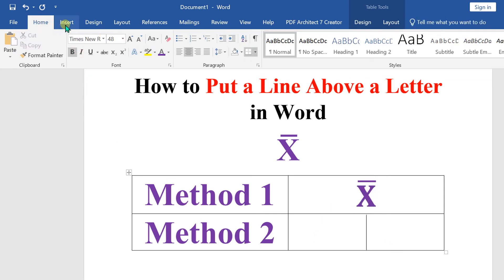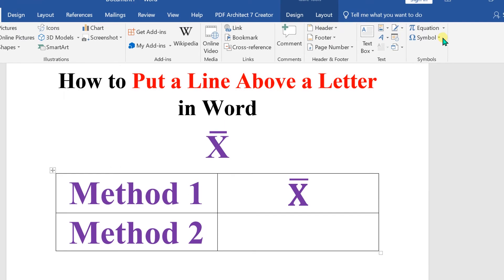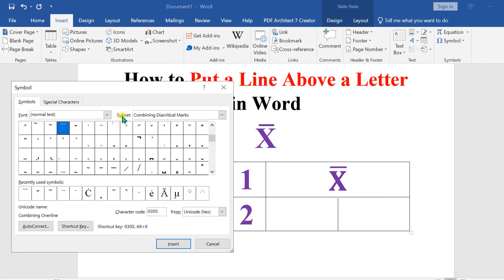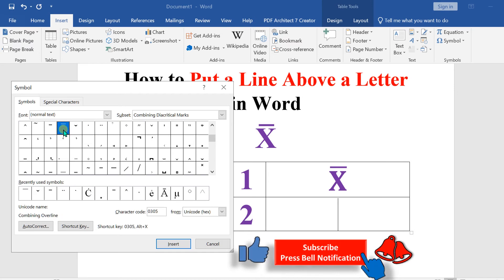In the second method, go to the Insert option and this time click on Symbol. Click on More Symbols and under the Subset, you will see this option. Select this option and you will see here Overhead. Click on the Overhead.